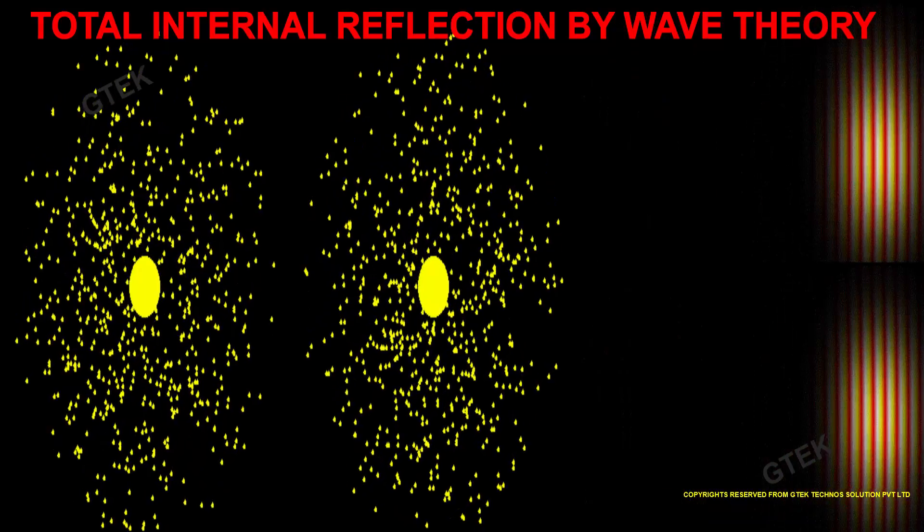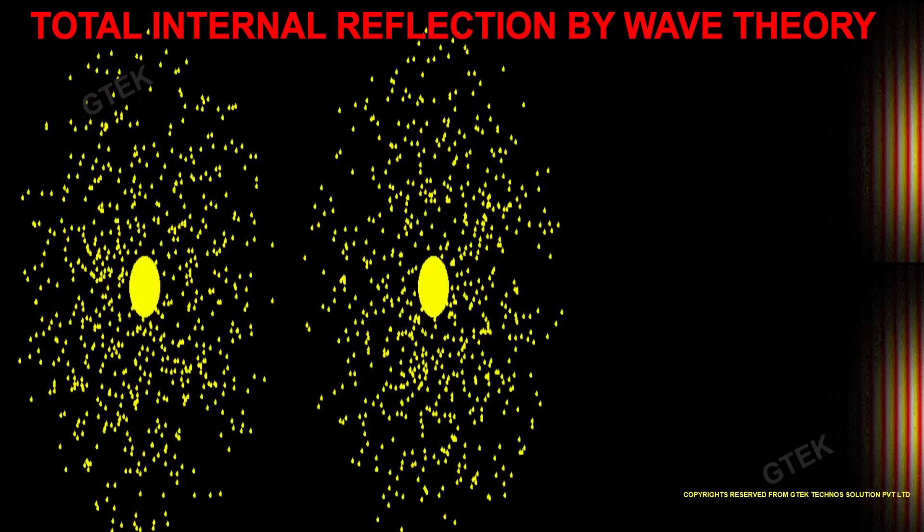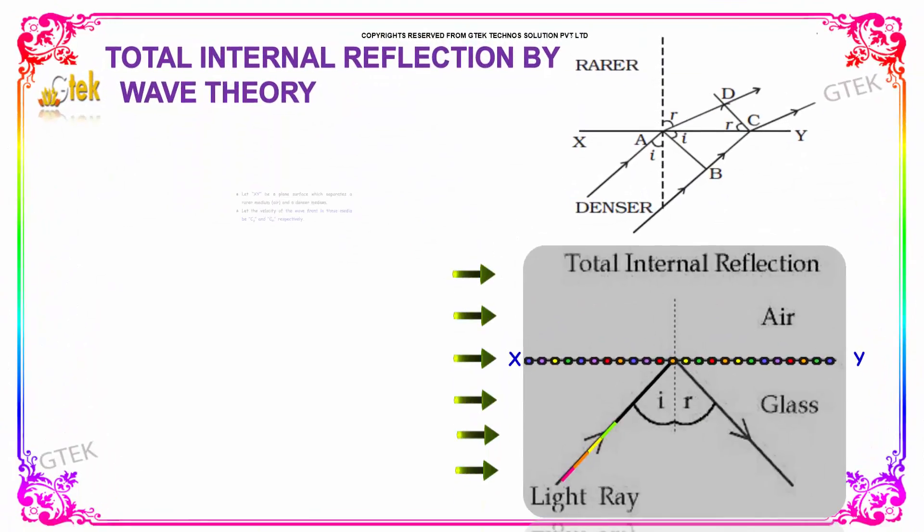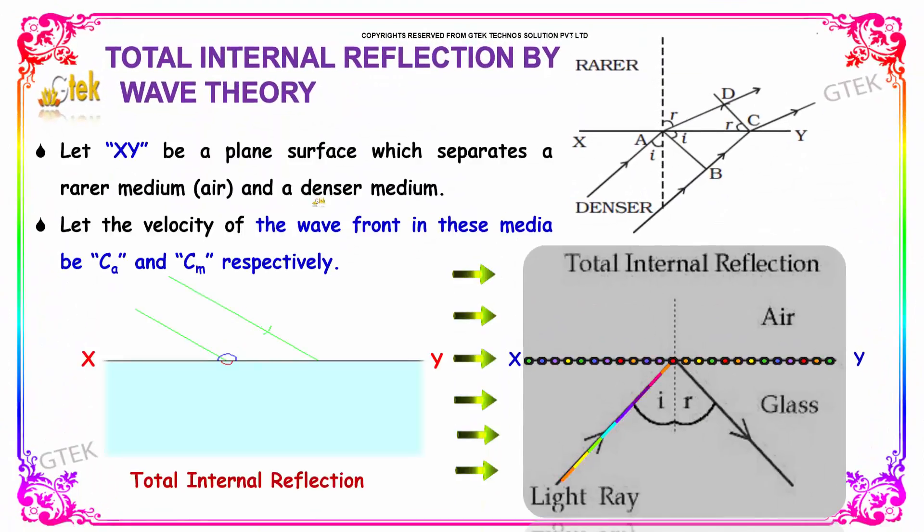Now, let's talk about the total internal reflection by wave theory. Let xy be the plane surface which separates the rarer medium and a denser medium.